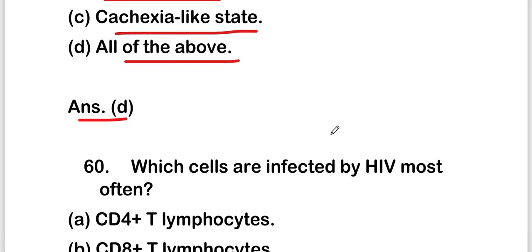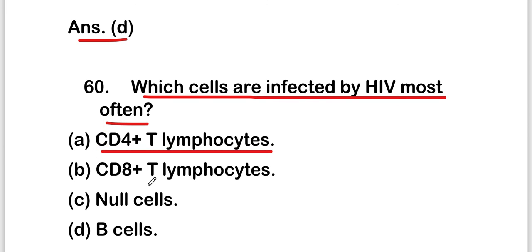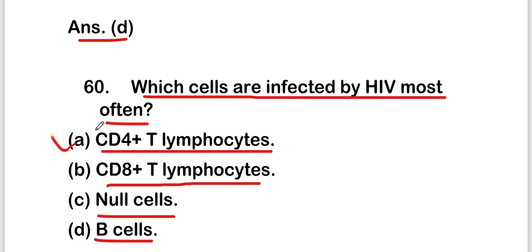The last question is: which cells are infected by HIV most often? Options are CD4+ T lymphocytes, CD8+ T lymphocytes, null cells, or B cells. The right answer is option A, that is CD4+ T lymphocytes are mostly infected by HIV.